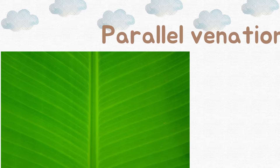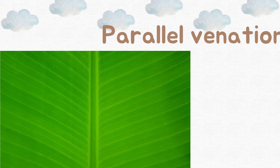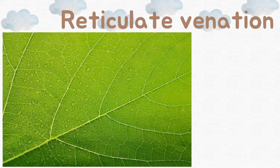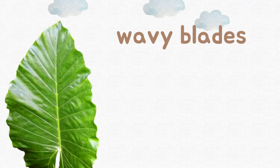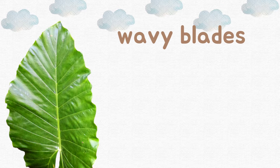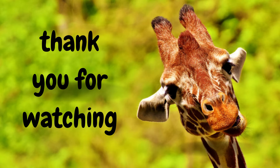Parallel venation — leaf venation can also be used as an external feature of the leaves. Here we see reticulate venation and wavy blade of the leaves. These are some small features that can be easily observed in plants. Thank you for watching.